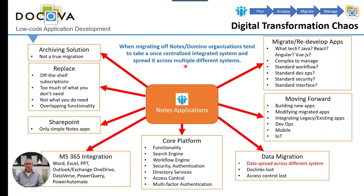And then SharePoint. Some applications can be replaced or moved over by SharePoint, typically simple applications without very much data. It's just another disparate system you're moving some applications to. Up in the top right — migrating or redeveloping your applications. What technology are you going to use? Java, React, Node.js, Angular, Vue.js? They're complex to imagine. If you already have those environments, there are a lot of components to Angular and you have to maintain the different versions of all those components — that can be a headache in and of itself. What about standard workflows, DevOps, security interface? What about moving forward — building new apps, modifying your migrated apps, DevOps, mobile interfaces, and IoT?